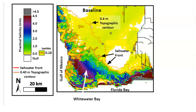This orange curve is the 0.4 meter topographic contour, and this red curve is the saltwater front, where saltwater can first be detected. The salinity is really only above 3 PSU, shown here in blue, in Whitewater Bay and in some of the peripheral ponds. So let's watch the saltwater front in response to the decreased rainfall scenario.